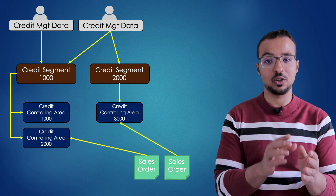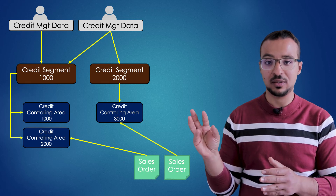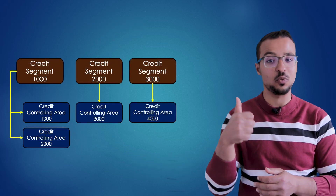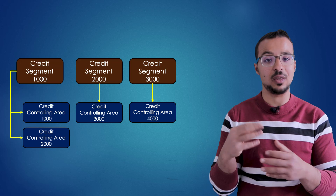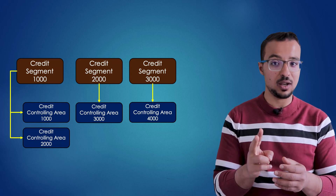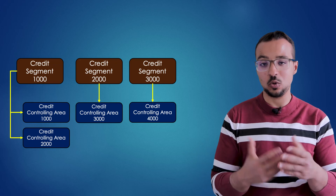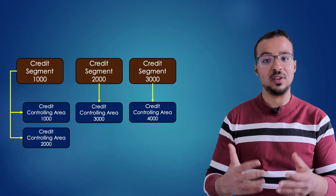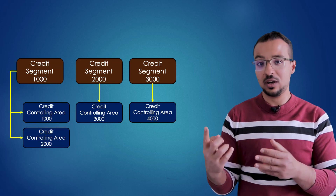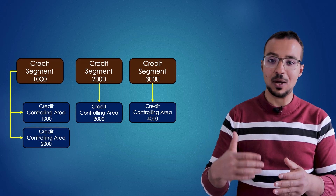Most of the configuration activities are done on the credit controlling area level. The use of a credit segment is very important in credit management because it offers two key functions. First, it offers a lot of flexibility in the determination of the credit limit and other credit management fields — we can have one credit segment assigned to one controlling area, or one credit segment assigned to multiple controlling areas. This covers business requirements such as having a different credit limit for every sales organization or company code, or having one credit limit for multiple company codes or sales organizations.